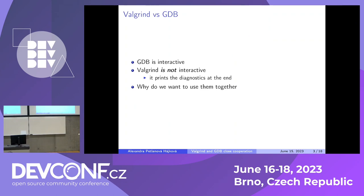GDB as a debugger is interactive — you run your program in GDB, you can stop it, inspect variables, and so on. But Valgrind is not. When you are running a program under Valgrind, you can't change anything on the fly; Valgrind will give you some diagnostics at the end. But when using Valgrind and GDB together, it's different. Valgrind has a GDB server embedded in it, and when running GDB, you can connect to Valgrind.